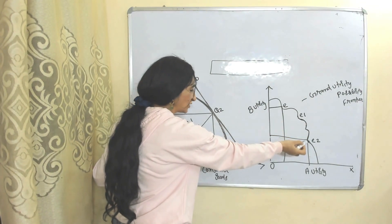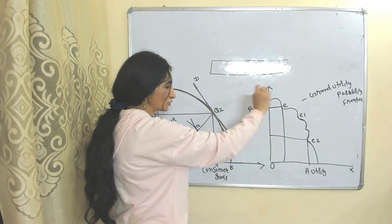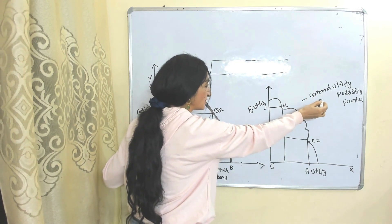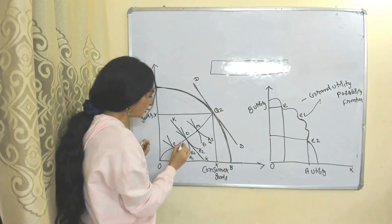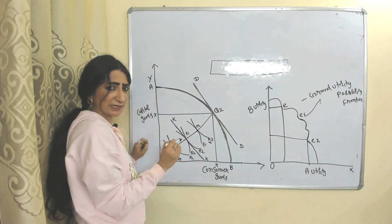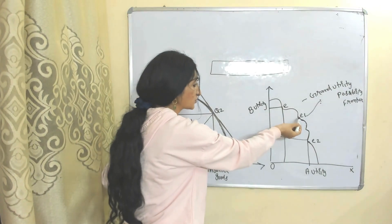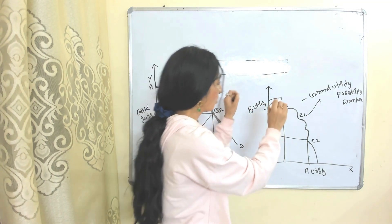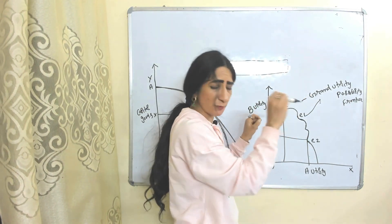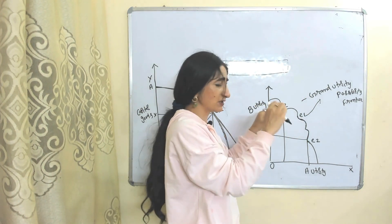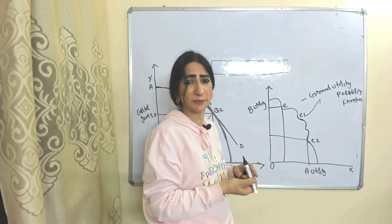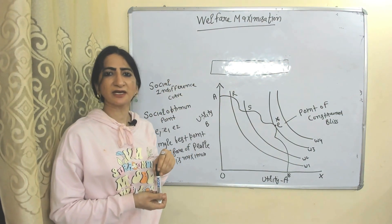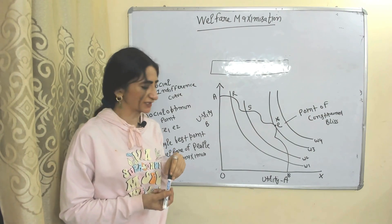We bring points E, E1, and E2 here and join all these points. When we join all these points, the resulting curve is called the Grand Utility Possibility Frontier. Since all these points show Pareto optimality, all points on the Grand Utility Possibility Frontier also show Pareto optimality.